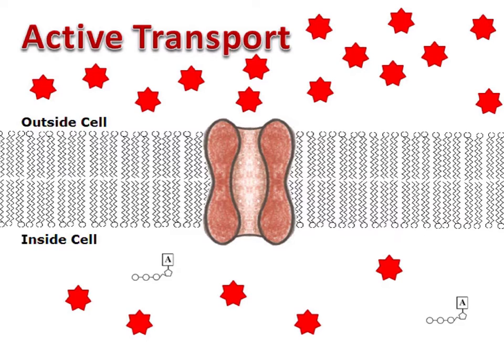Here we have an example of active transport. In this scenario, we have a higher concentration on the outside and a lower concentration on the inside.